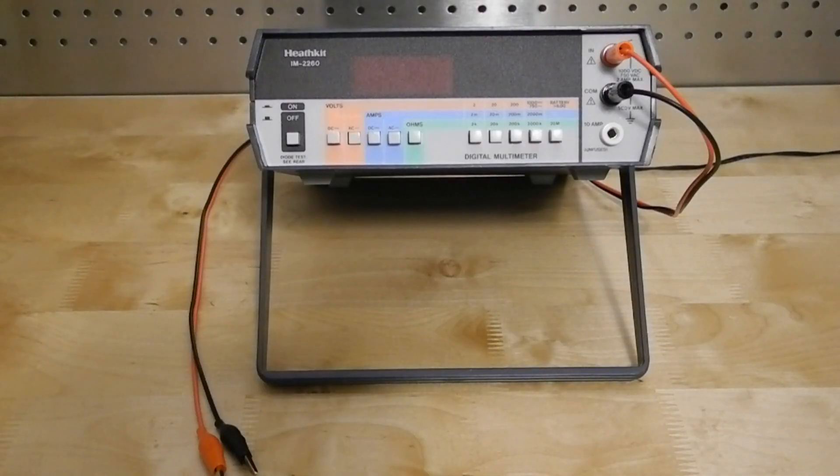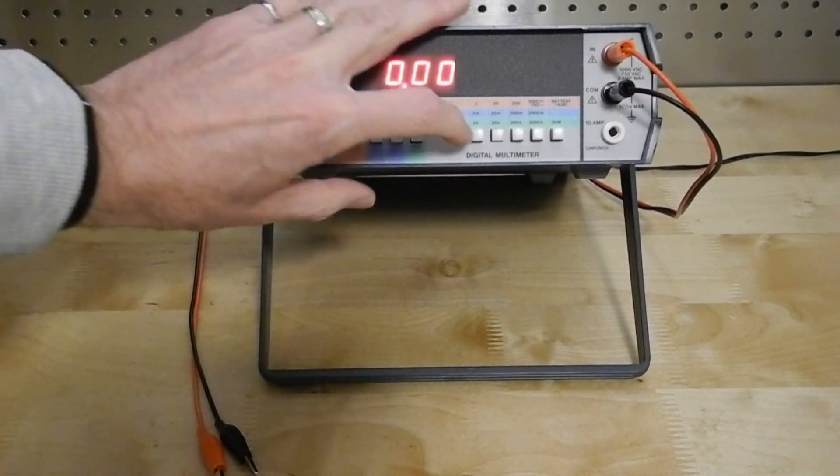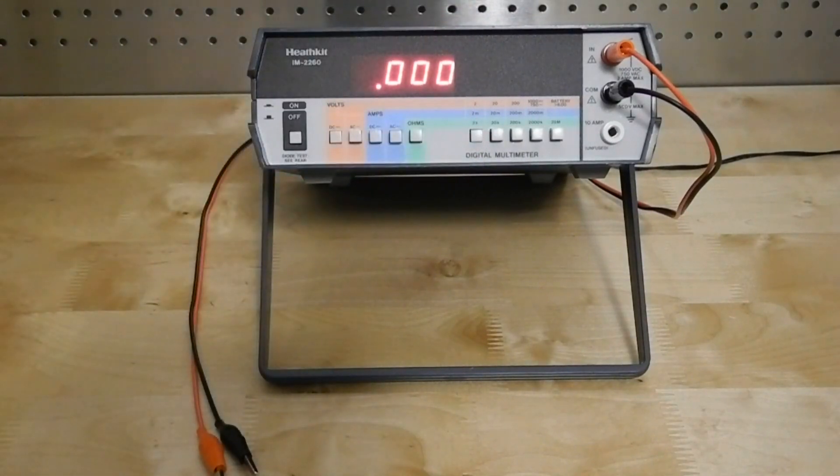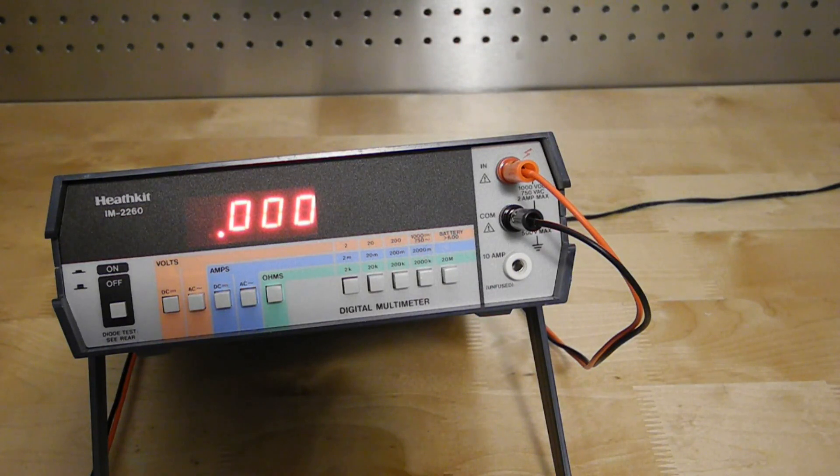The operation is pretty straightforward. You turn the unit on, select the function, and then the range. All ranges use the COM and IN jacks, except for the 10-amp current range, which uses a separate jack.